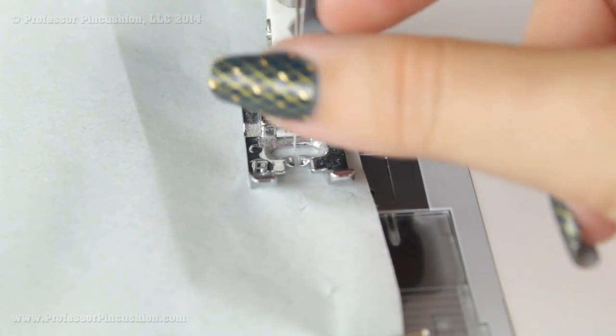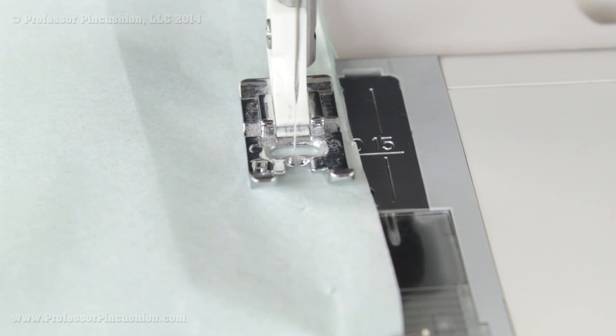For sewing through chiffon, I'm using just regular all-purpose thread, but you can use a finer thread such as silk thread. And for the needle, make sure that you change this to a new needle and you're using a sharp needle. The weight is for lightweight so that's going to be about a size seventy ten.